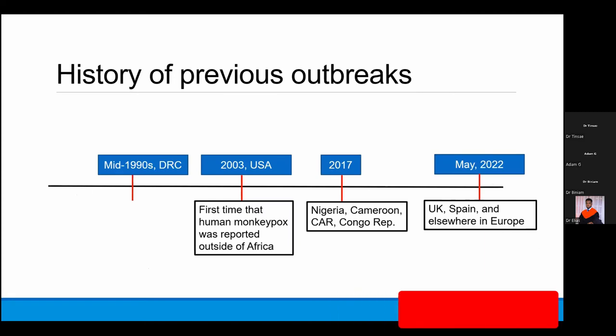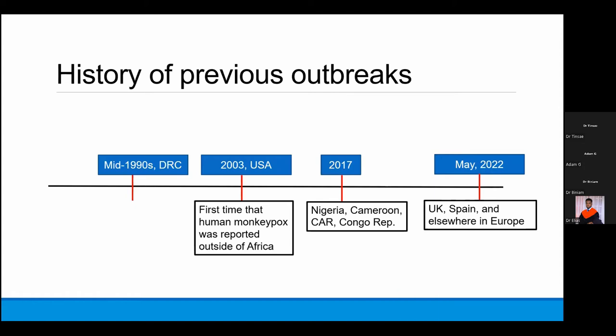Looking at previous outbreaks: following its discovery in 1970, there was one large outbreak in the mid-1990s in the DR Congo. The rest of the world took notice when, for the first time, human monkeypox was reported outside of Africa in 2003 in a cluster of cases in the United States. Starting from 2017 onwards, a large outbreak originally began in Nigeria, later spreading to Cameroon, Central African Republic, and Congo, and it is ongoing in many parts of Central and Western Africa.